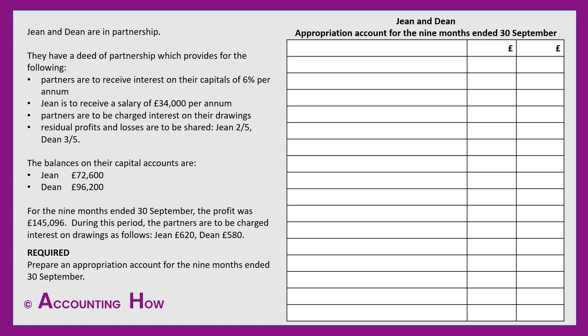Jean and Dean are in partnership. Their deed of partnership provides for the following: partners are to receive interest on their capitals of 6% per annum; Jean is to receive a salary of £34,000 per annum; partners are to be charged interest on drawings; and residual profits and losses are to be shared — Jean two-fifths, Dean three-fifths. The balances on their capital accounts are given, and for the nine months ended 30th September the profit was £145,096. The partners are to be charged interest on drawings: Jean £620, Dean £580. We're asked to prepare the appropriation account for the nine months ended 30th September.